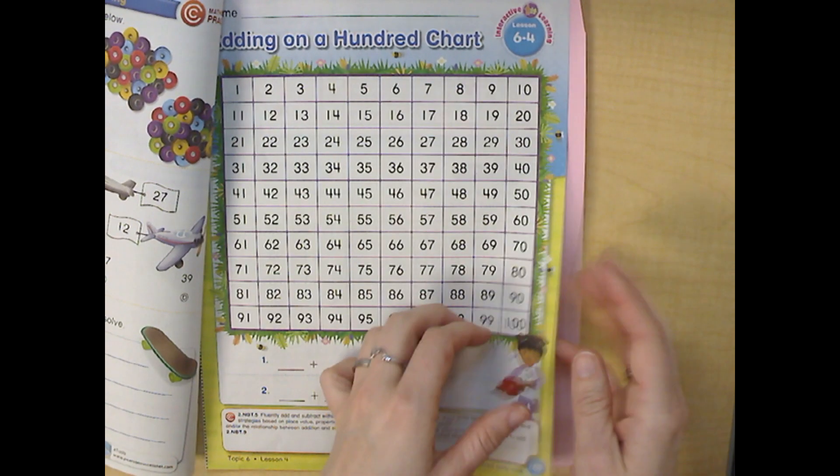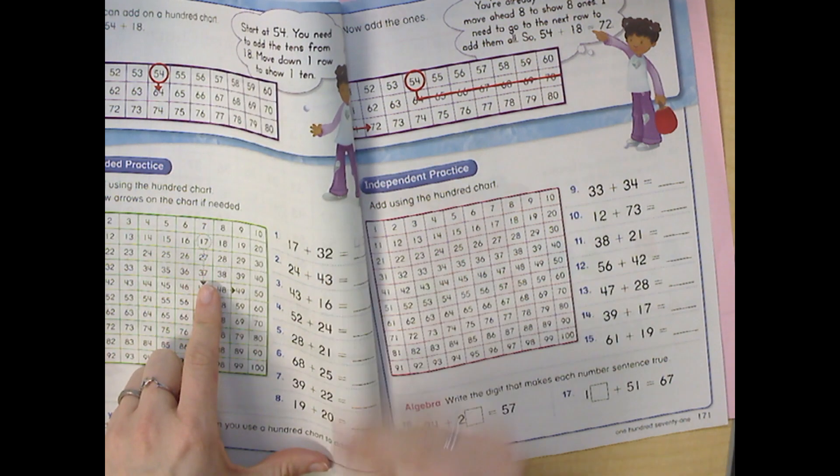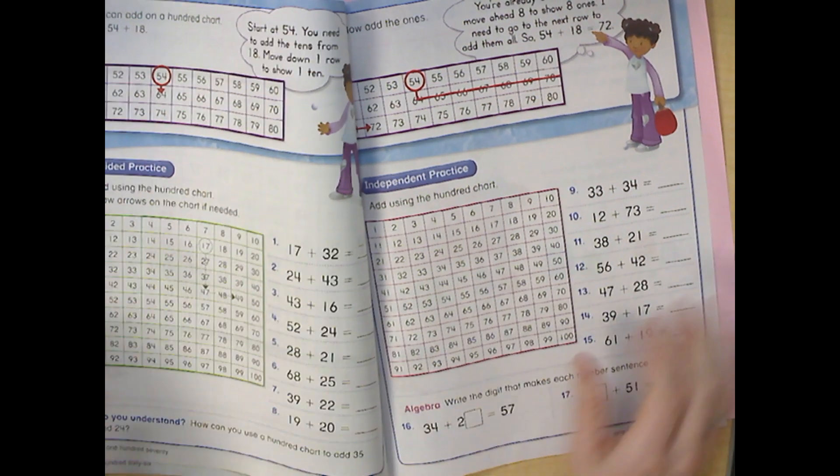The next packet gives you a 100s chart to work with. You can use the 100s chart to solve your problems, or you can use any other strategy that works for you.